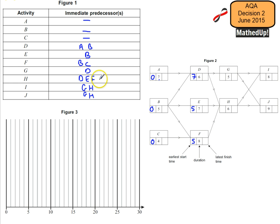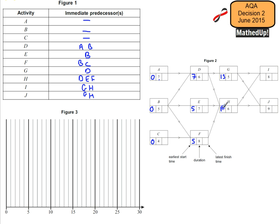In order for G to start, D needs to be completed. D starts after 7 minutes, so add another 6 minutes, making 13. In order for H to start, each of these 3 activities need to be completed: 7 plus 6 is 13, 5 plus 7 is 12, 5 plus 8 is 13. So it needs at least 13 minutes before it can start. For I to start, G and H need to be completed: 13 plus 5 is 18, and 13 plus 6 is 19, so it's going to be 19 minutes at the earliest.